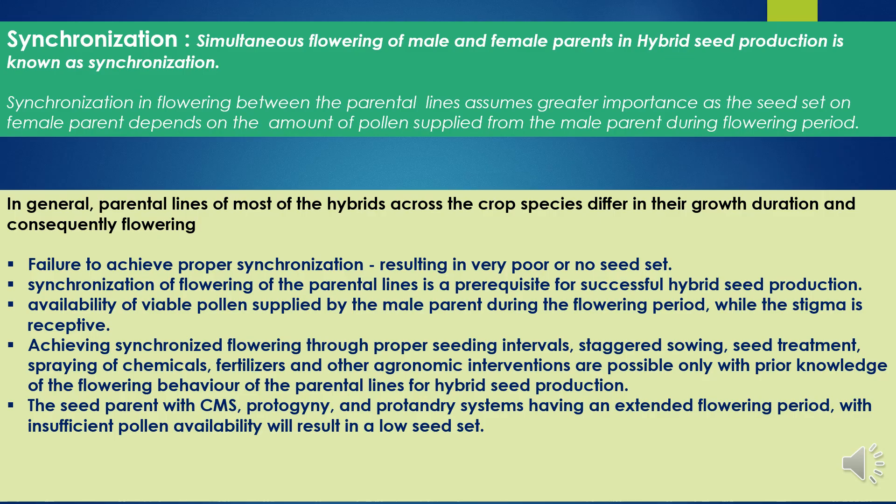In hybrid seed production, synchronization is of great importance. Simultaneous flowering of male and female parents is known as synchronization. Seed set on female parents depends on the amount of pollen supplied from the male parent during the flowering period. Parental lines of most hybrids across crop species differ in their growth duration and consequently their flowering. Failure to achieve proper synchronization is the most commonly encountered problem in hybrid seed production, resulting in very poor or no seed set.